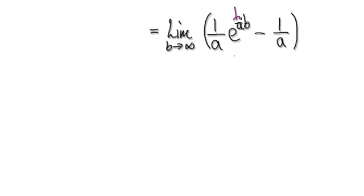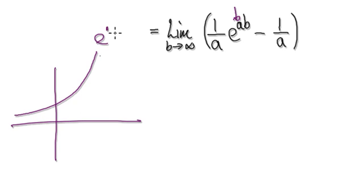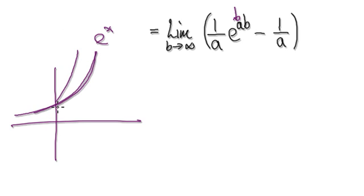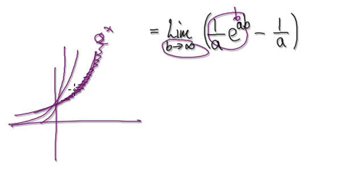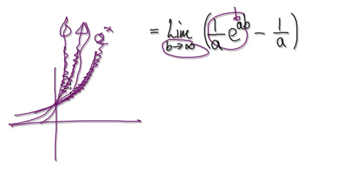Suppose a is 1 — you're going to have a graph of e to the x, which looks something like this. Then e to the 2x looks something like this, e to the 3x looks something like this. As b heads towards infinity, you can see that this thing is just going to grow and grow. So when a is greater than 0, it's just going to grow and grow — it diverges.